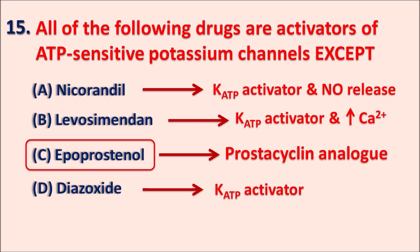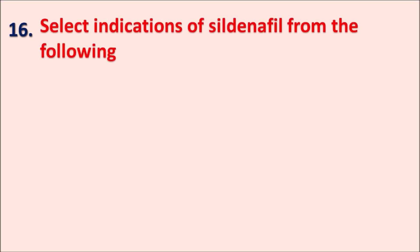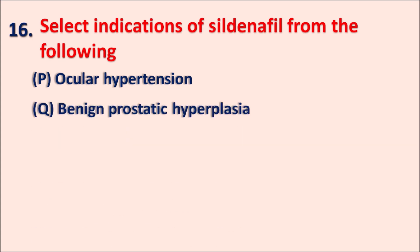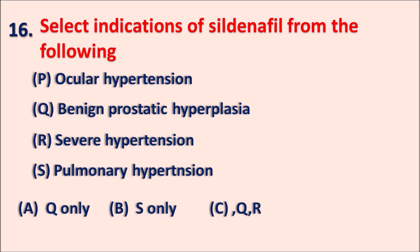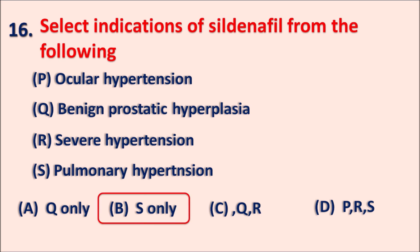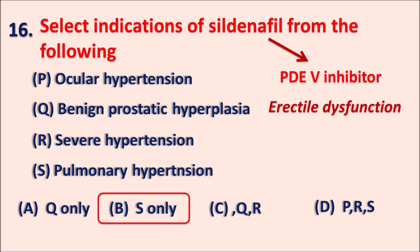Question sixteen: Select the indications of sildenafil from the following. P - ocular hypertension, Q - benign prostatic hyperplasia, R - severe hypertension, S - pulmonary hypertension. The right answer is pulmonary hypertension (S only). Sildenafil is a phosphodiesterase type 5 inhibitor used in treatment of erectile dysfunction and pulmonary hypertension. Since it produces vasodilatation, it can be used for pulmonary hypertension, but it cannot be used for ocular hypertension, essential hypertension, or severe hypertension.